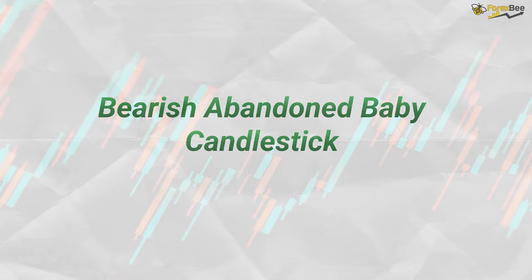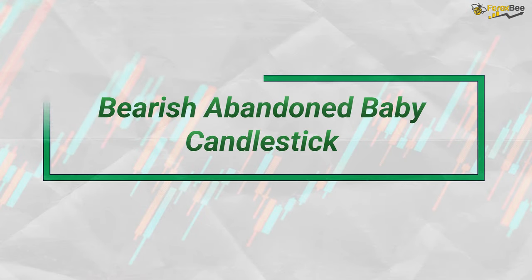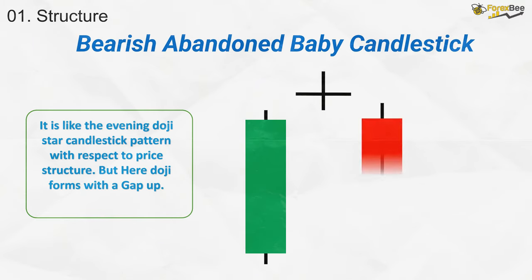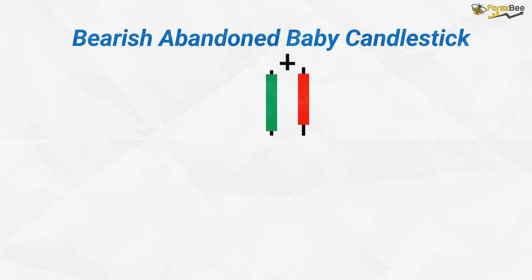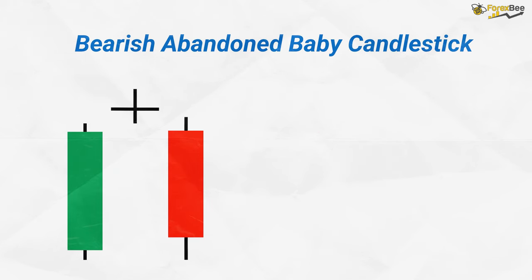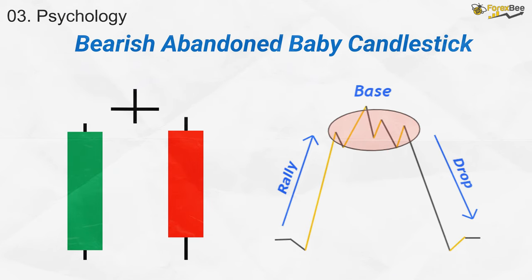Now, let's look at the bearish abandoned baby candlestick pattern. This pattern also consists of three candles, mirroring the structure of the evening doji star, but with a key difference: the doji candle in the middle opens and closes with a gap up. The bearish abandoned baby acts as a strong bearish reversal pattern and usually forms at a resistance or supply zone. The psychology is similar to a rally-base-drop supply zone, where bullish momentum weakens, leading to a shift from bullish to bearish.